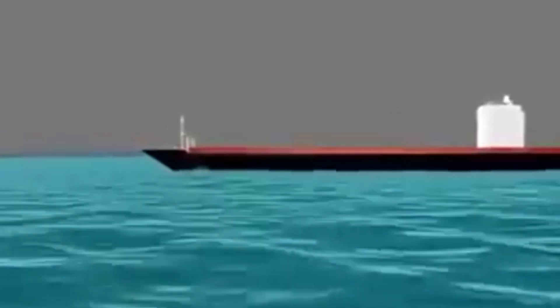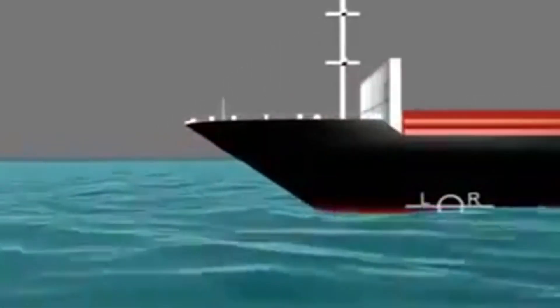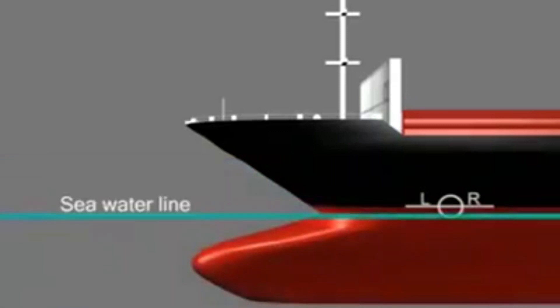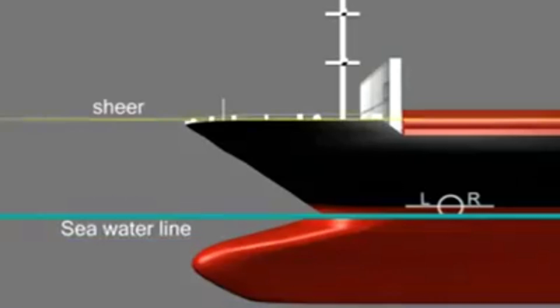The purpose of a load line or Plimsol line is to ensure that the ship is not overloaded and has sufficient freeboard. It indicates the maximum safe draft and the minimum freeboard for the ship in various operating conditions.